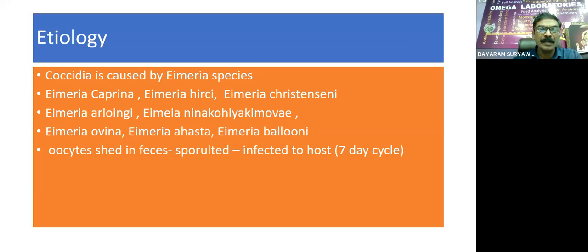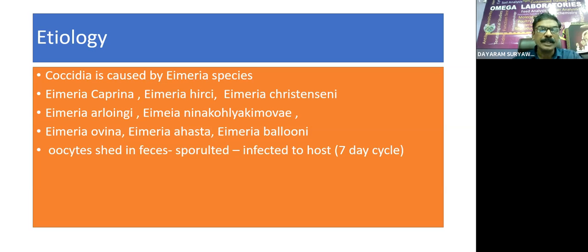Coccidia is caused by a variety of Eimeria species. These species include Eimeria caprina, Eimeria hirci, Eimeria christenseni, Eimeria erlongi, Eimeria ninakohlyakimovae, Eimeria ovina, Eimeria arloingi, and Eimeria baluni. These are the species of coccidia that can be seen in sheep and goat in India.